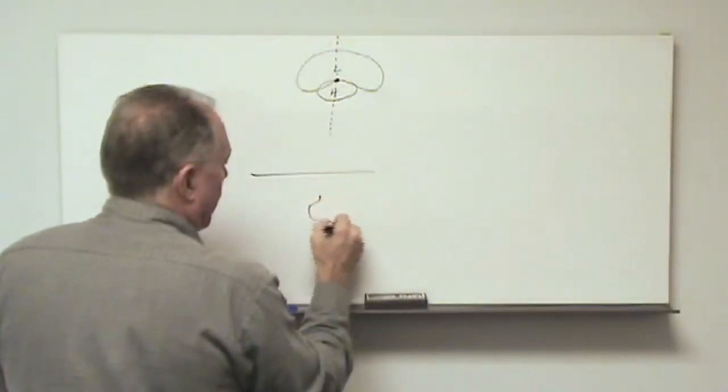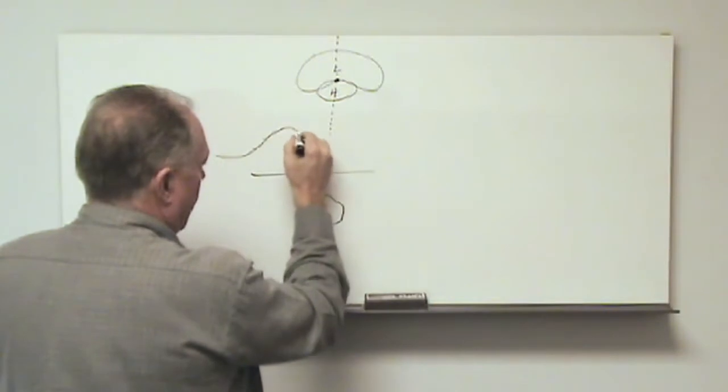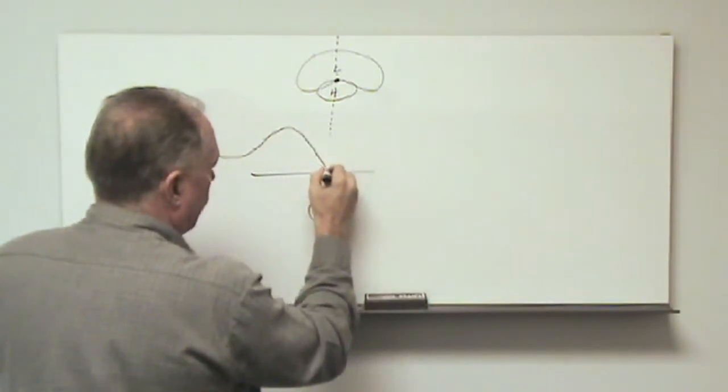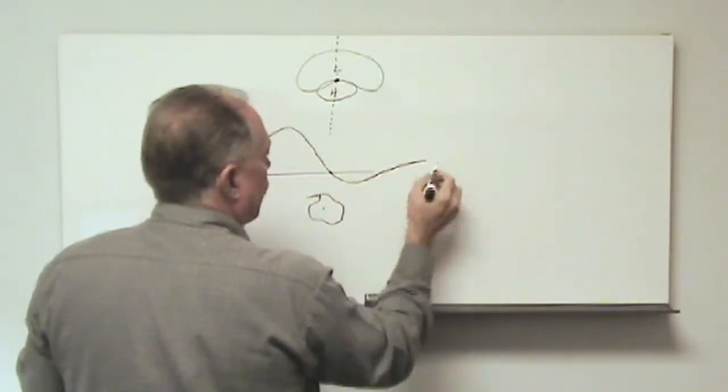We would see a high to the south, we would go through an inflection point where the object is, and then we would see a low to the north.